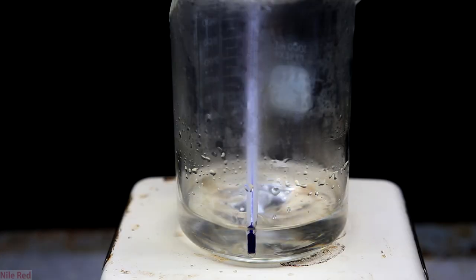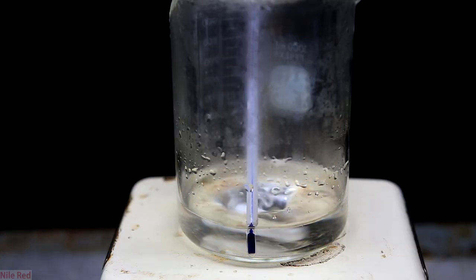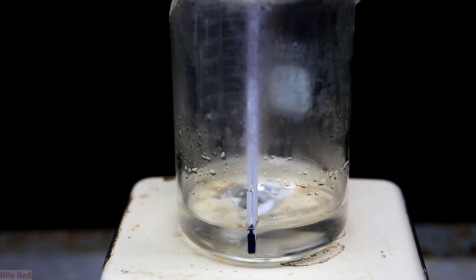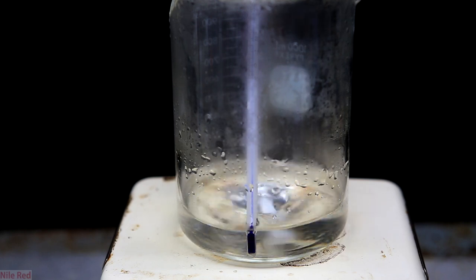When the volume got low, I added a thermometer and I monitored the temperature. Ammonium formate melts at 116°C, so we have to make sure we don't overheat it. I would keep the temperature between 115 and 120 degrees Celsius for a while.